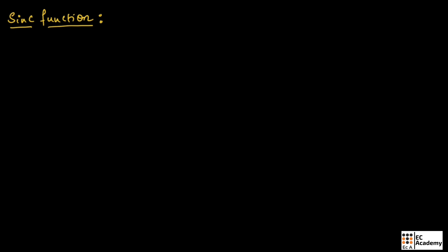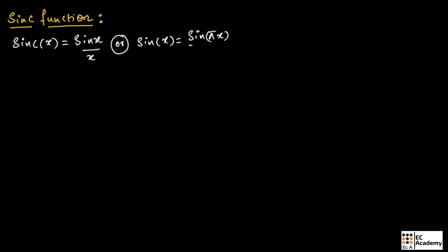In Fourier transform, sinc function is very much important to analyze the signal. We can define sinc function as sinc of x is equal to sin(x)/x, or we can define it as sinc of x is equal to sin(πx)/(πx). Sinc function can be of two types: the first one is unnormalized sinc function and the second one is normalized sinc function.